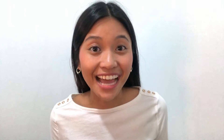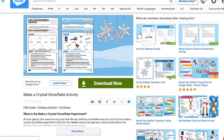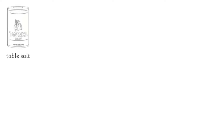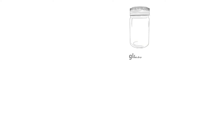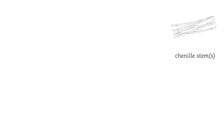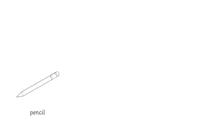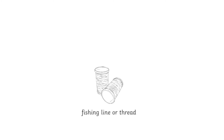If you like science, try to make a crystal snowflake with an adult in the room. You'll need some table salt, boiling water, a glass jar, chenille stems, a pencil, fishing liner thread, and a spoon.